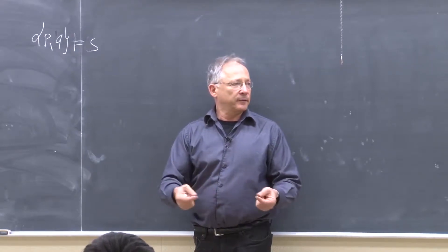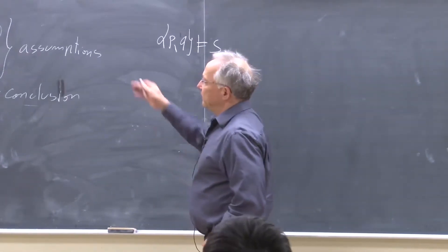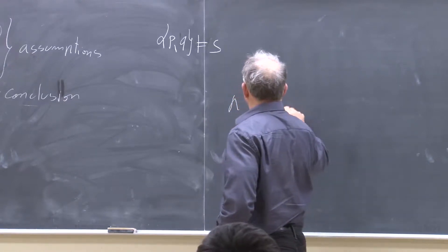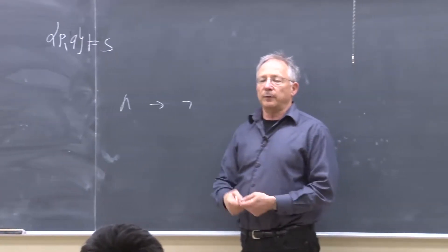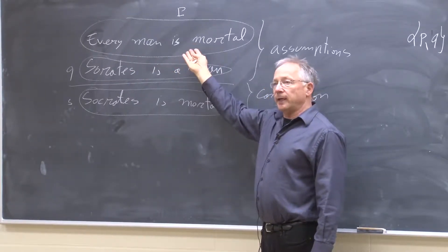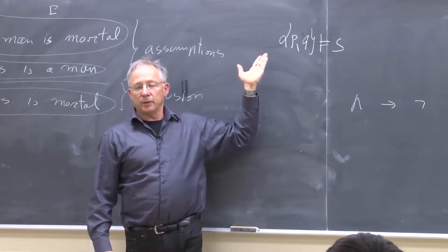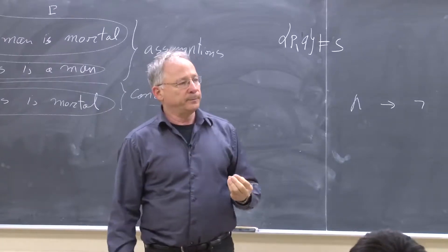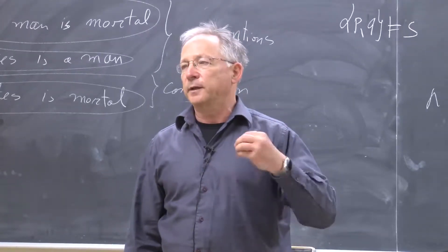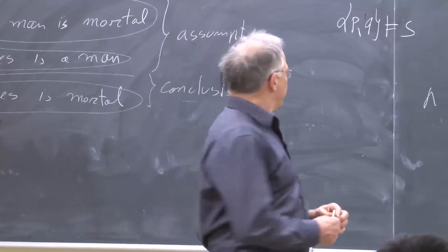If I try to translate it to propositional logic, I get that P and Q implies S. But we have no reason to see why this P and Q implies this S. There is nothing that propositional logic can tell us about why this is valid, because propositional logic doesn't look into the inside of a statement. It just takes a statement and views only one aspect of it: is it true or is it false?